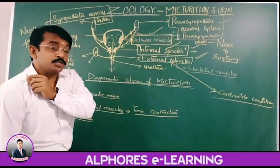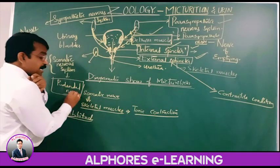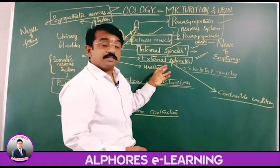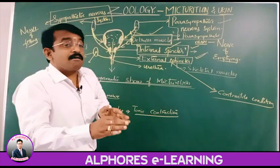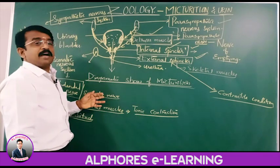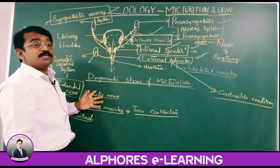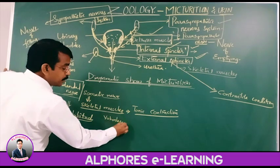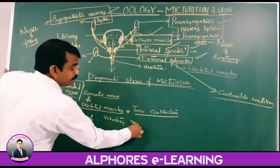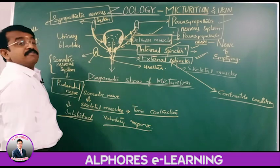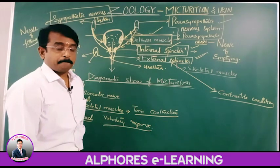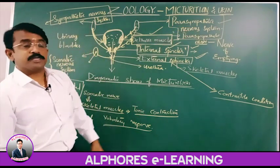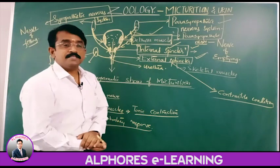The point to remember is that the somatic nerve forming the external sphincter is always in a contractile condition, but during micturition it is relaxed — which means it is a voluntary response. That is the reason why we say micturition is a voluntary process.